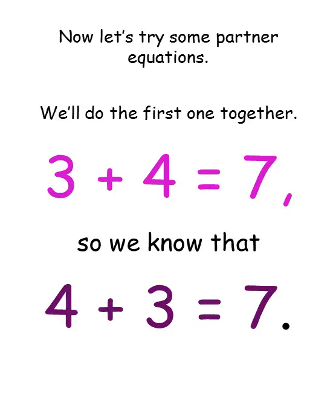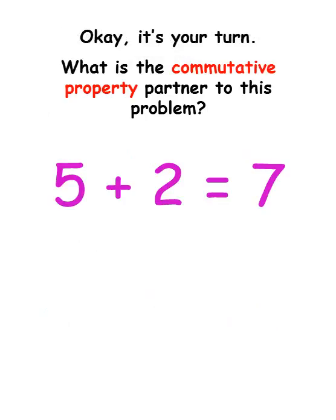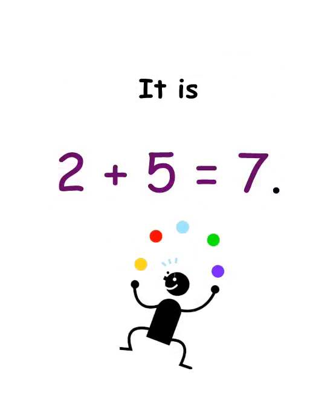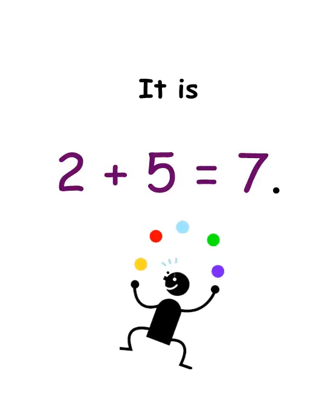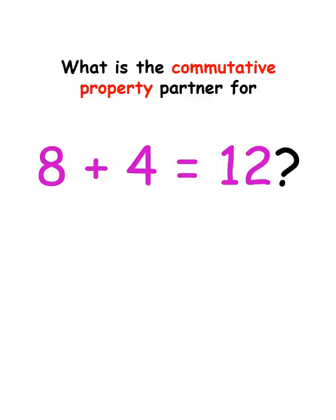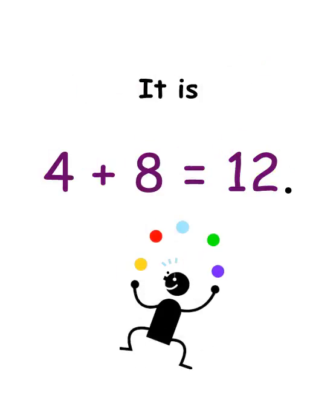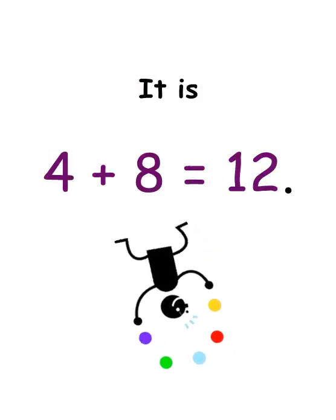Now let's try some partner equations. We'll do the first one together. 3 plus 4 equals 7, so we know that 4 plus 3 equals 7. Okay, it's your turn. What is the Commutative Property Partner to this problem? 5 plus 2 equals 7 — it is 2 plus 5 equals 7. Did you know that? What is the Commutative Property Partner for 8 plus 4 equals 12? It is 4 plus 8 equals 12.